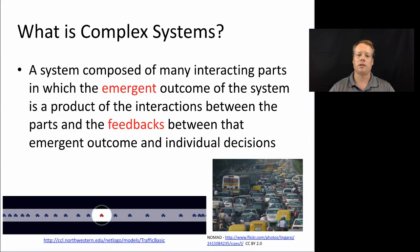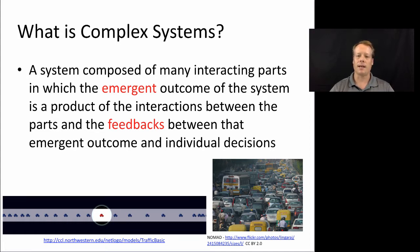Let's take an example of the traffic model that you saw already — the basic traffic model with the red car moving along that kind of stops and starts quite a bit. On the right I have a picture of an actual traffic jam as an illustration. The system here is composed of many interacting parts: all the cars interacting with each other, controlled by the speed of the other cars, but also controlled by the feedback from the emergent outcome. The emergent outcome of the traffic model is a traffic jam — a set of stopped cars that can't go anywhere — and those stopped cars feed back to affect the individual decisions of the cars that are moving.